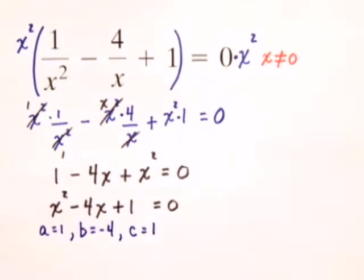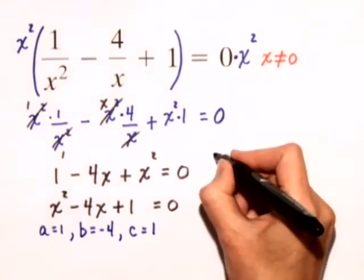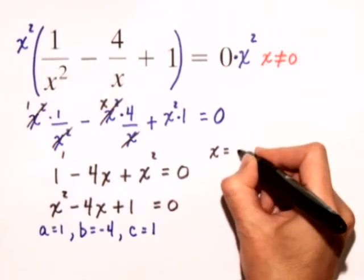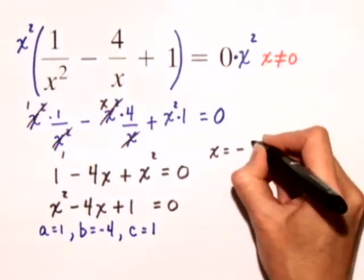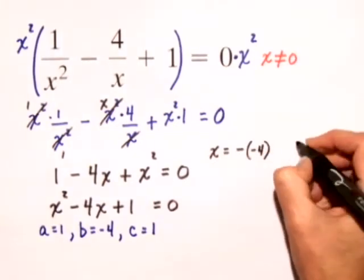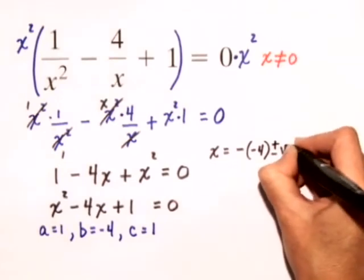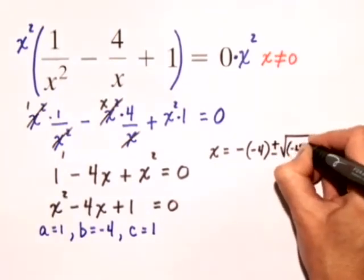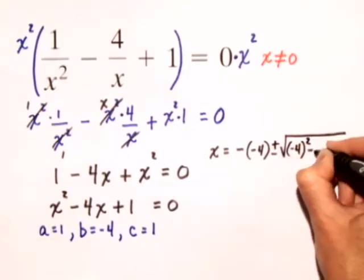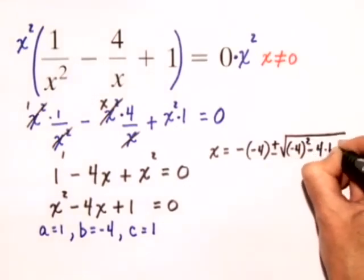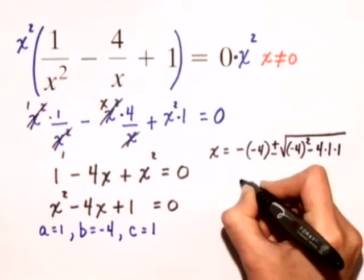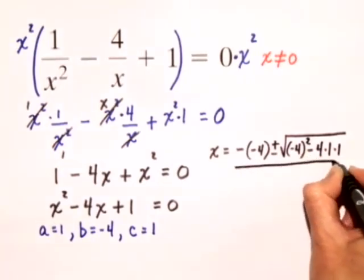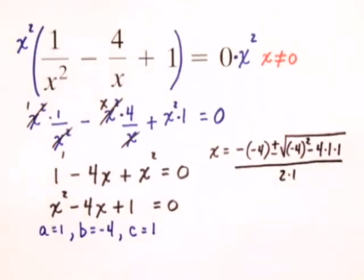Let's substitute these values into the quadratic formula, and we'll get the following solution. We'll get that x is equal to negative b, which is negative 4, plus or minus the square root of b squared, so I have negative 4 squared, minus 4 times a, which is 1, times c, which is 1, and that's all over 2 times a, which is 1.